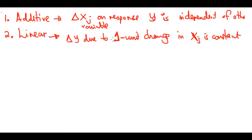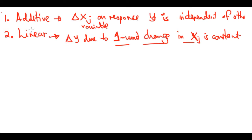We're saying: whether we increase our TV budget from zero to one thousand or from fifty thousand to fifty-one thousand — the same one-thousand-unit change in xj produces the same change in y. But is it really true that increasing the TV budget from fifty-one thousand to fifty-two thousand has the same effect as going from zero to one thousand? I don't think so.